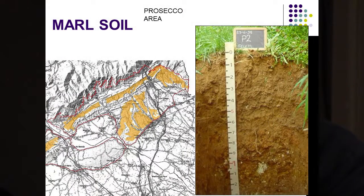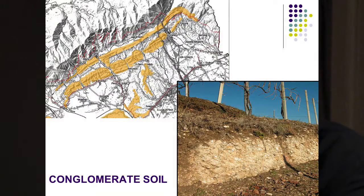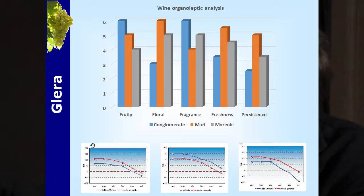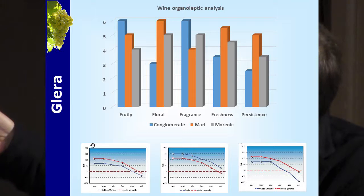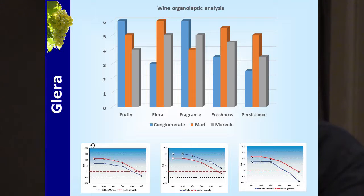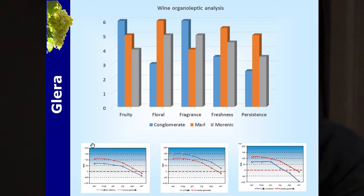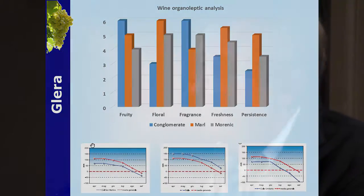Here we are in the Prosecco area. The soil conditions of this area are divided into three different soil types — marl soil, conglomerate soil and moranic soil. Due to different water holding capacity, they are totally different in three cases and we obtain three different sparkling wines. In conglomerate, we have more fruity and more fragrance. In the marl soil, where we don't have any hydric stress, we have more floral character and more freshness due to higher acidity. In the moranic area, starting just in May and June, we can have some hydric stress, and the wine composition is different — it depends on the water available capacity of the soil.